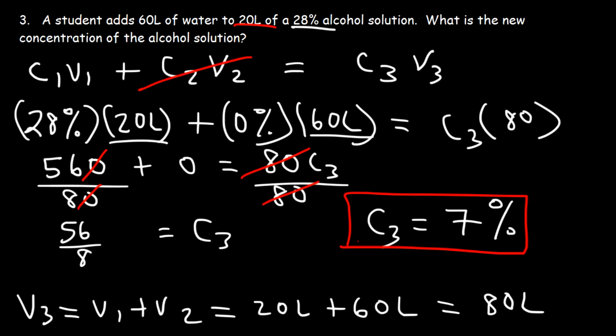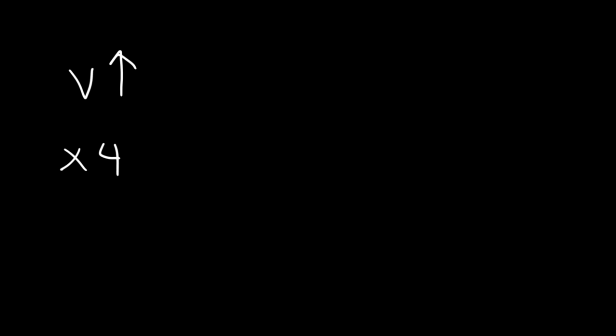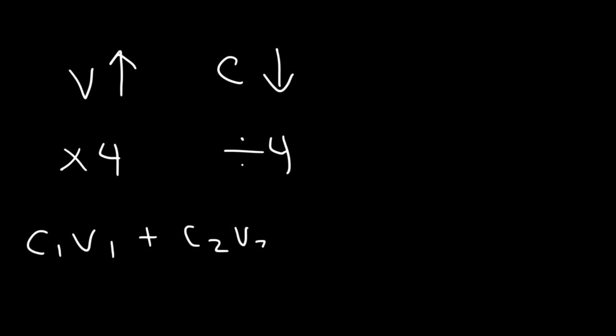Whenever you add water to a solution, the concentration always goes down. Anytime you add water, you dilute the solution, and when you dilute it, you decrease the concentration. It decreased from 28 to 7 — it decreased by a factor of 4 because the volume went up by a factor of 4. The volume went from 20 liters to 80 liters when you add 60. If you increase the volume by a factor of 4 without adding any new alcohol content, the concentration will decrease by a factor of 4. So that's it for this video. Hopefully this gave you a better understanding of how to solve mixture problems. Use this equation or some variation of it — it's very useful for solving these types of problems. Thanks for watching.